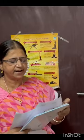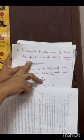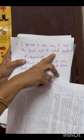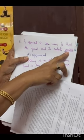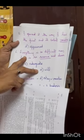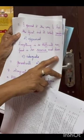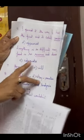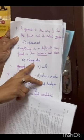The next antonym: 'I opened it the way I had the first and its contents vanished.' The antonym of 'vanished' is 'appeared.' Sixth question: 'Everything is so difficult now. Food is so scarce and dear.' Scarce means rare, so the antonym is 'adequate.'